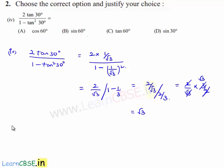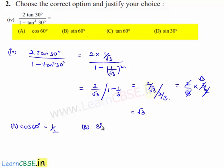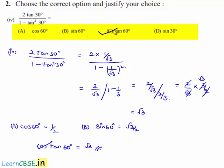Now let us verify the solution from the given options. Option A gives cos 60, whose value is 1 by 2, which is not equal to root 3. Option B gives sin 60, whose value is root 3 by 2, which is also not equal to root 3. Option C gives tan 60 degrees, whose value is root 3. Therefore, option C is the required solution.